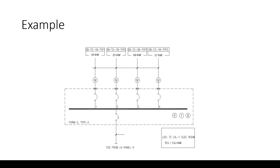Let's apply what we've learned with a typical example. We have an electrical SMDB or panel with an incomer handling four downstream loads. The total connected load (TCL) is 112 kilowatts, made up of four distribution boards: 10 kW, 25 kW, 60 kW, and 17 kW. We will calculate the circuit breaker sizing — cable sizing will be covered in coming videos.